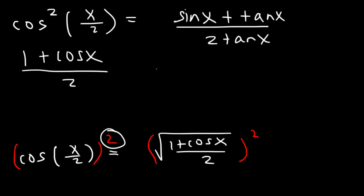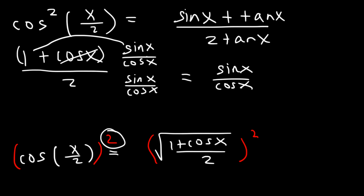Now what we're going to do is we're going to multiply the top and the bottom by sine over cosine. So sine over cosine times 1, that's going to be sine over cosine. And here cosine will cancel, leaving us with sine.